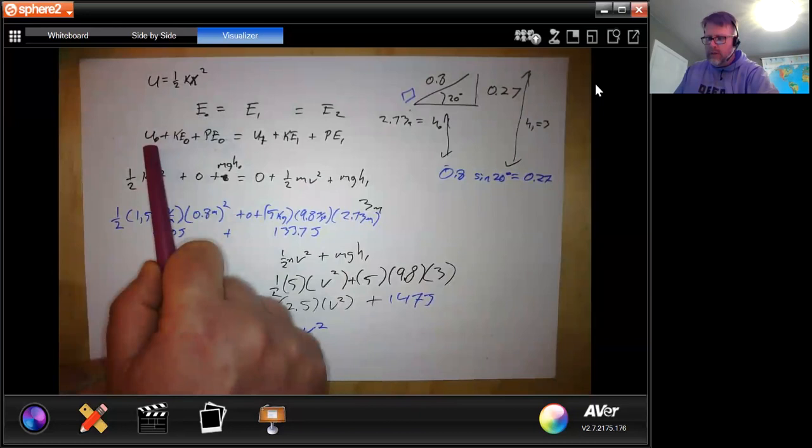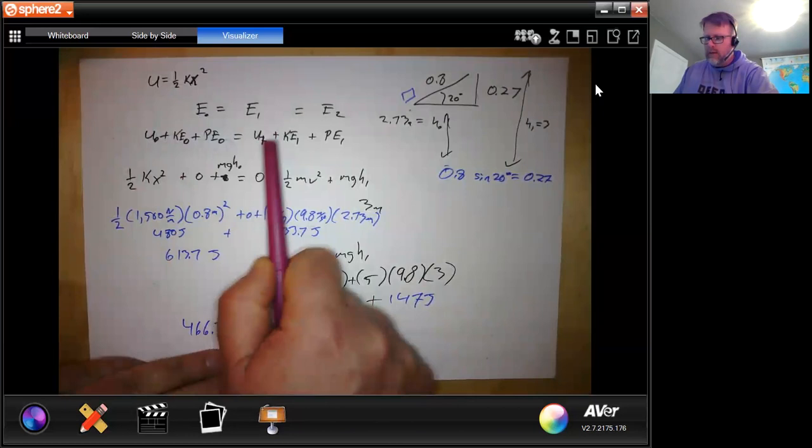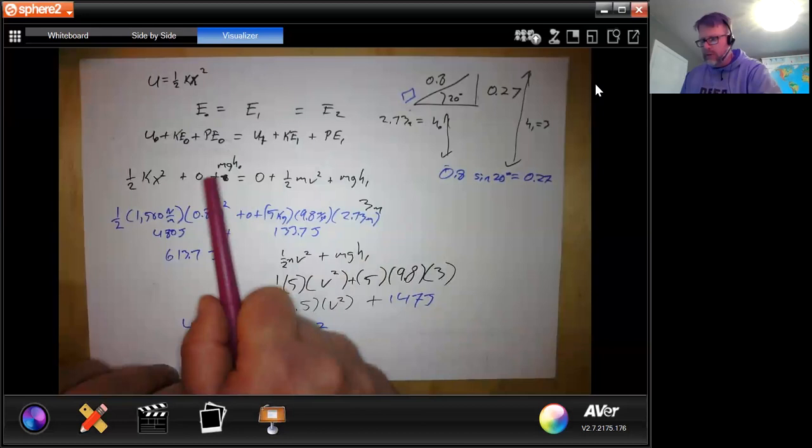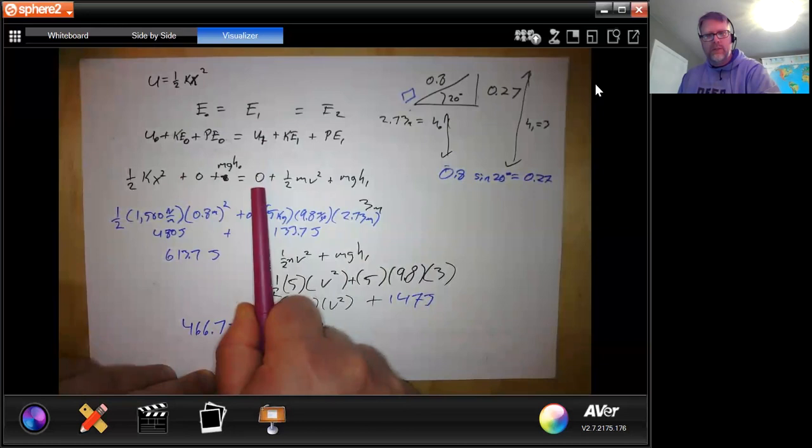All right, so we have our energy from the spring, our kinetic energy and potential energy. Spring, potential, gravitational. So with these points we can now start identifying some zeros. It starts at rest, it ends with the spring completely released. They are both above ground.